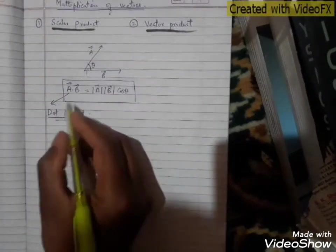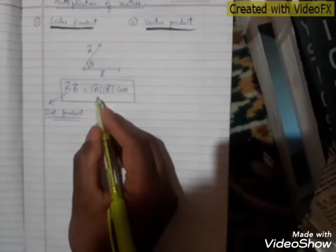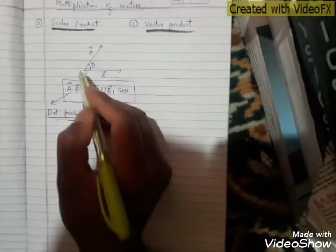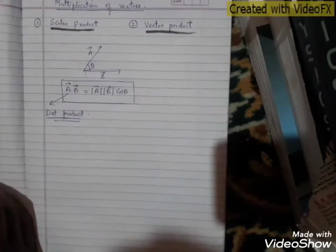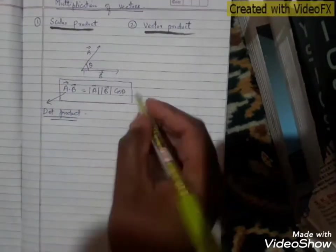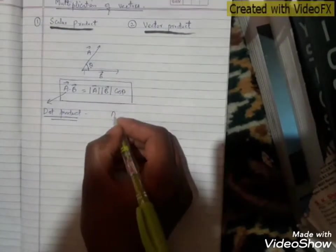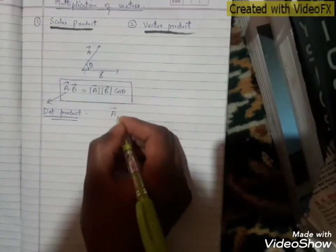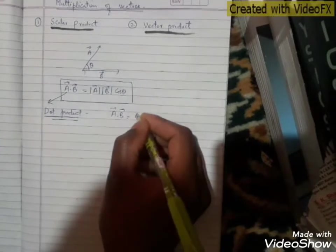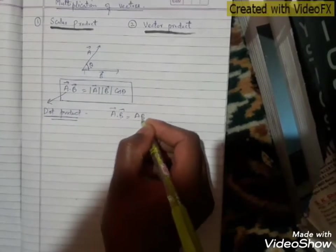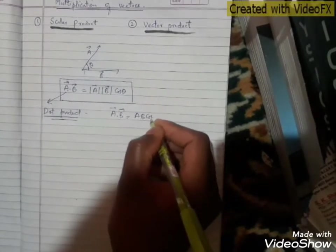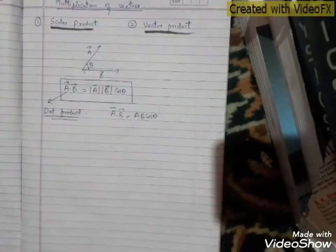So A dot B is magnitude of A times magnitude of B times cosine of angle theta. Here theta is the smaller angle between two vectors A and B. We can write A dot B simply as AB cos theta.